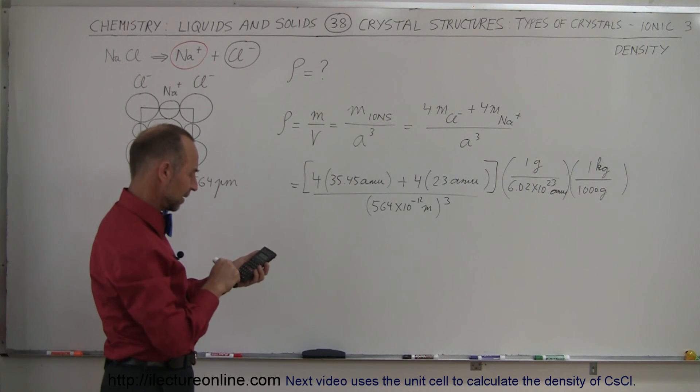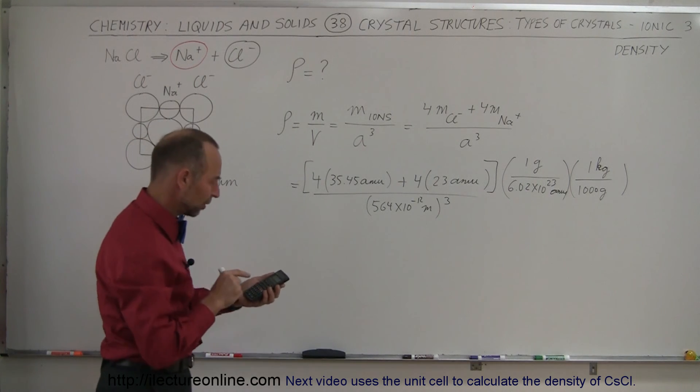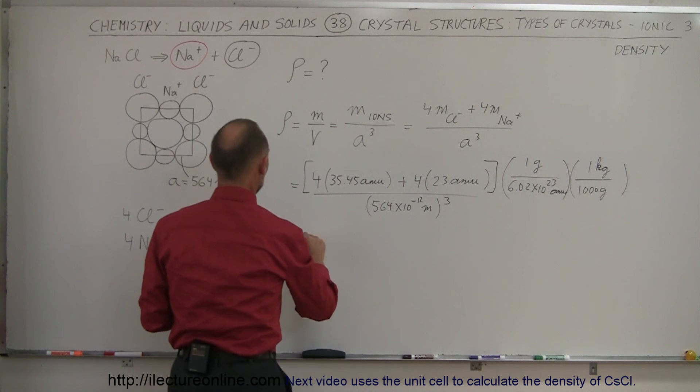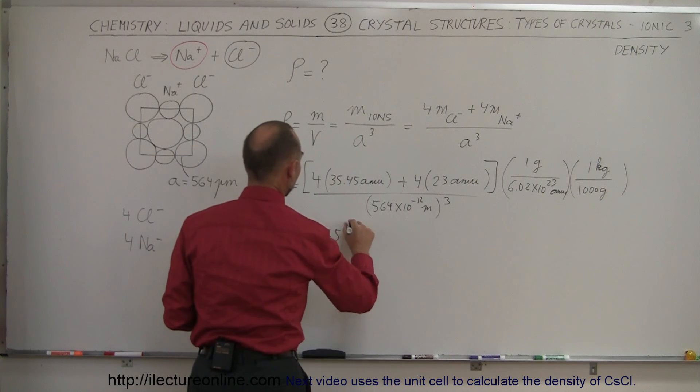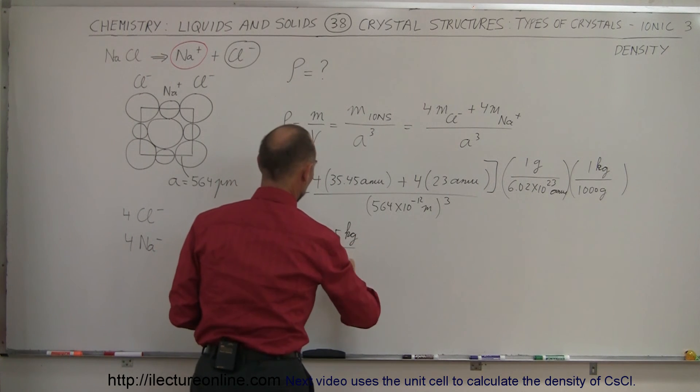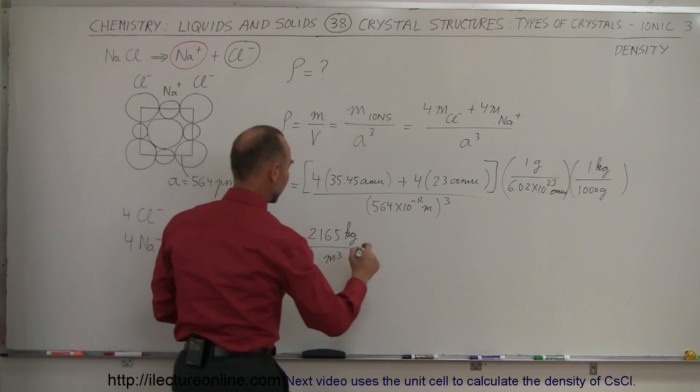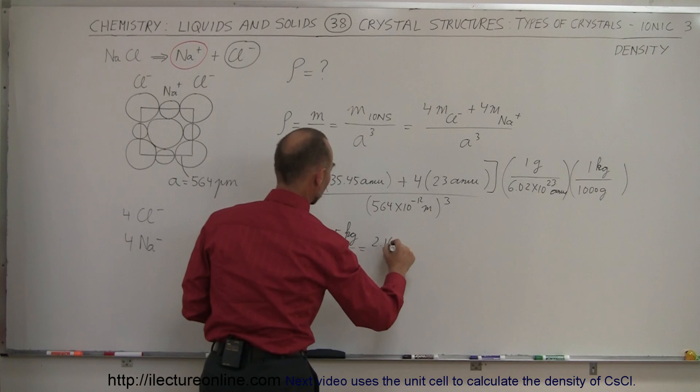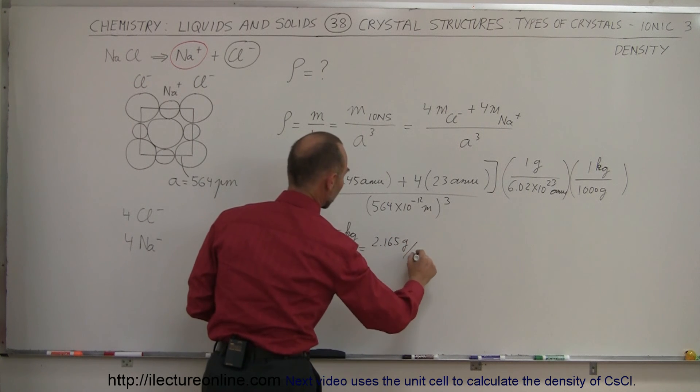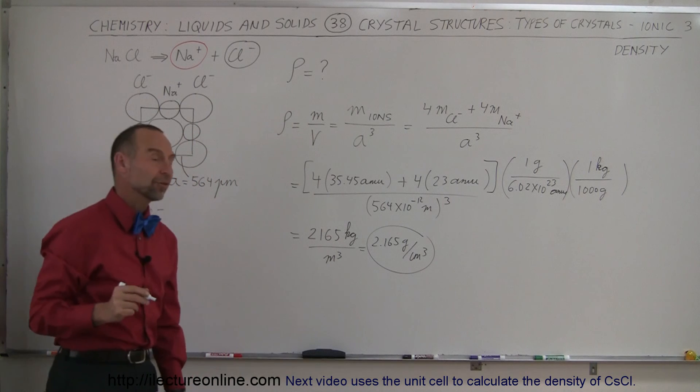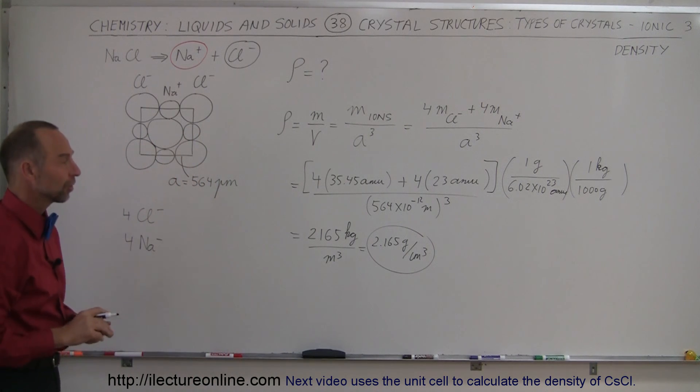That leaves us with 2165 kilograms per cubic meter. So 2165 kilograms per cubic meter, and that would then be equal to, if we then divide by 1000, that was 2.165 grams per cubic centimeter. And that's spot on, that is just about the exact density of sodium chloride.